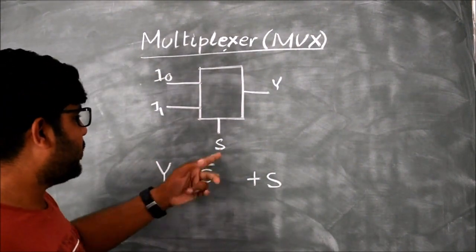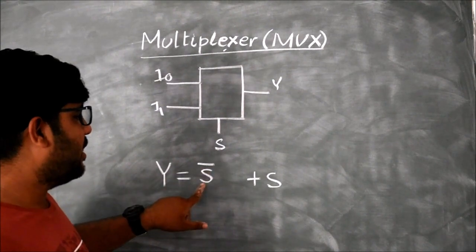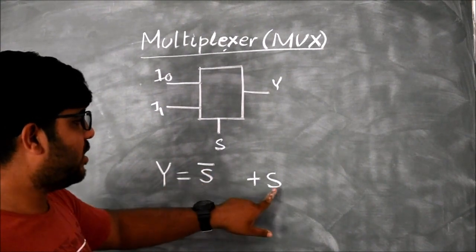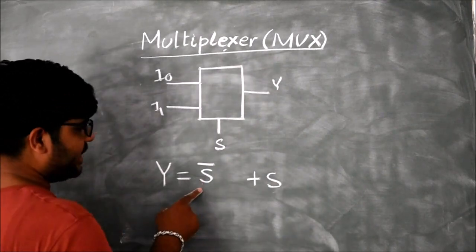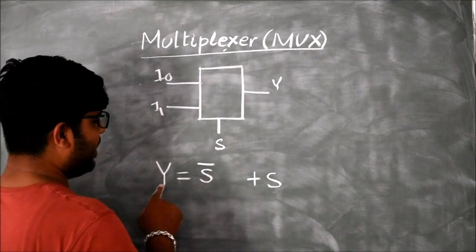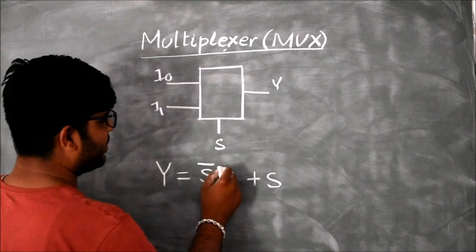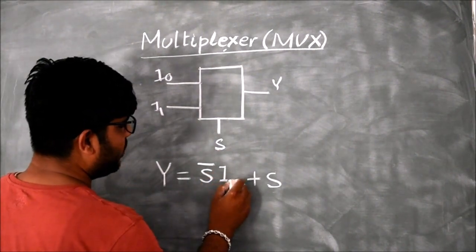S can be used as complement form or S can be used as normal form. When S is complement form, then Y is equal to I0.